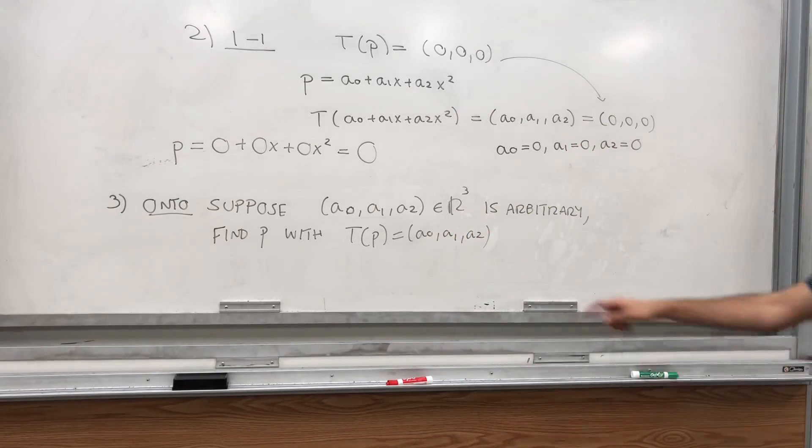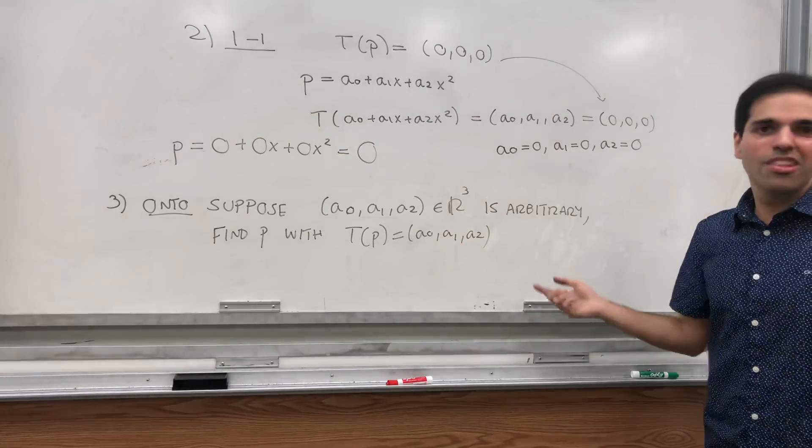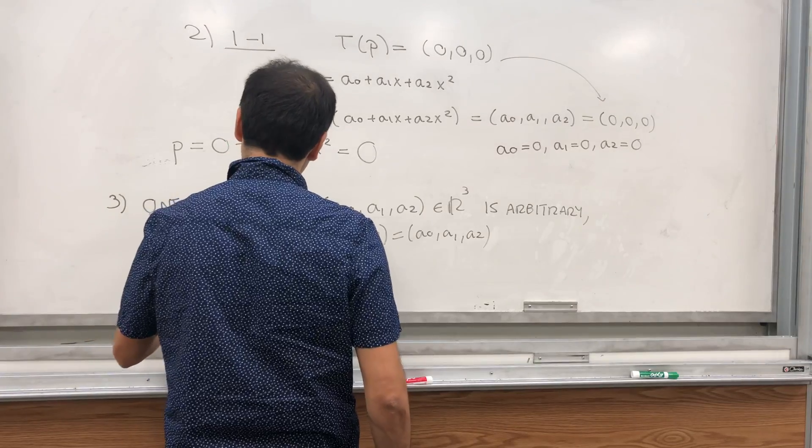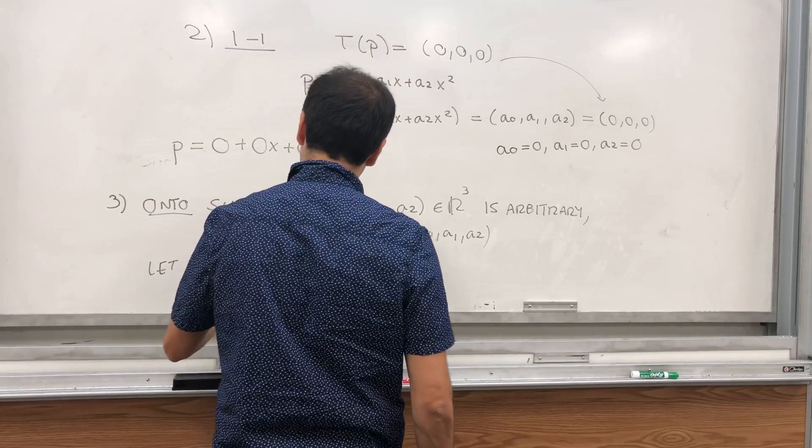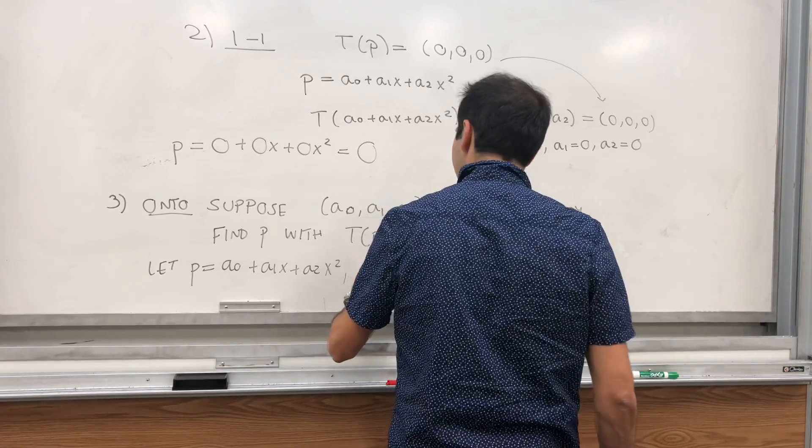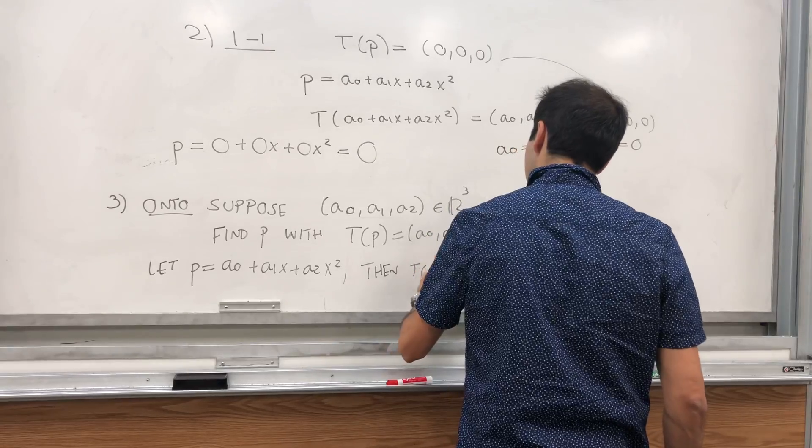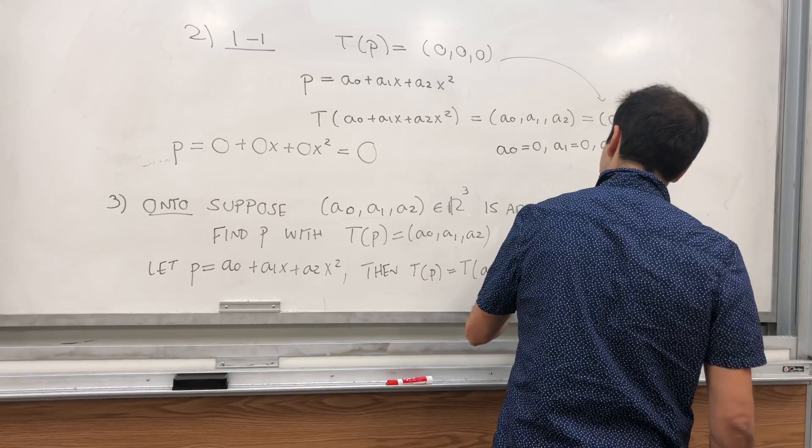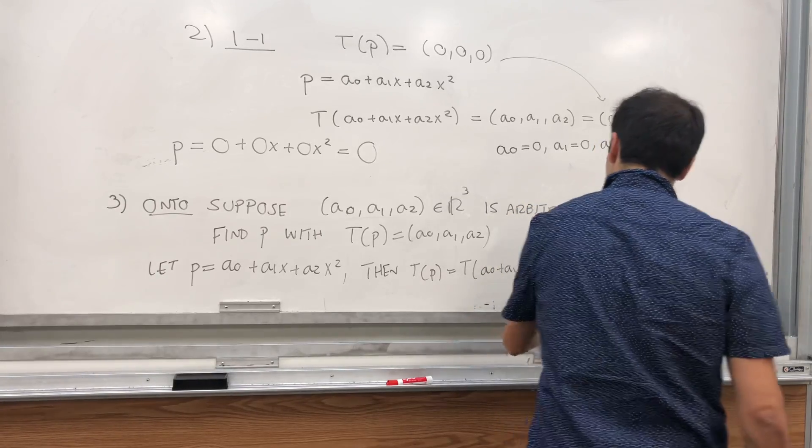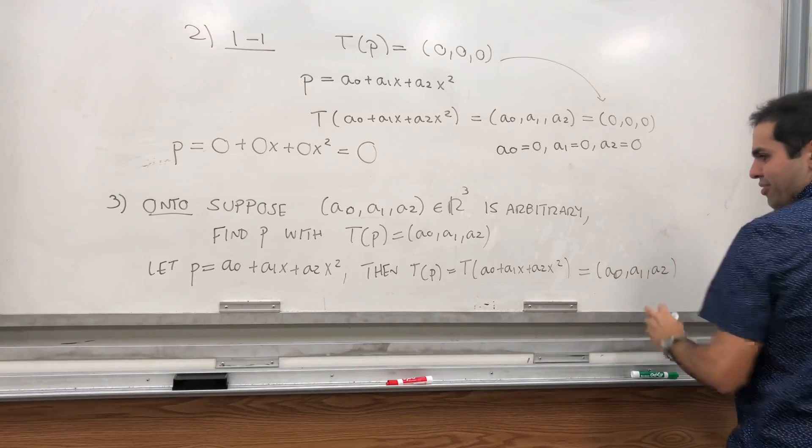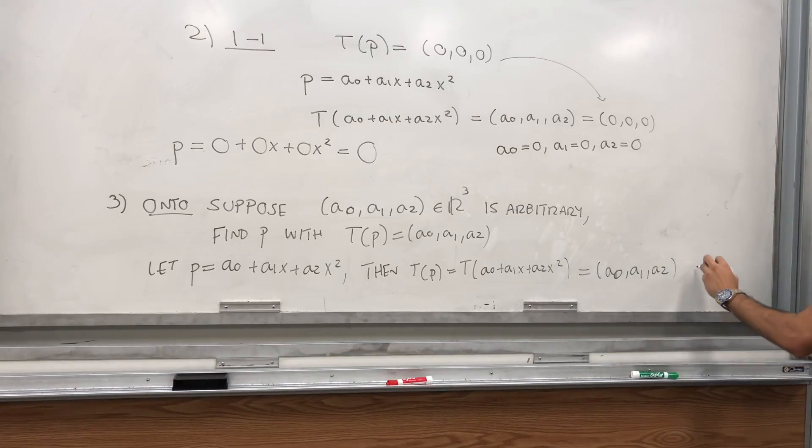It's just a polynomial with those coefficients. So let P be precisely a0 plus a1x plus a2x squared. Then indeed, T of P, that's T of (a0 plus a1x plus a2x squared) equals (a0, a1, a2), and that's just by definition of T. And we get that this is true.